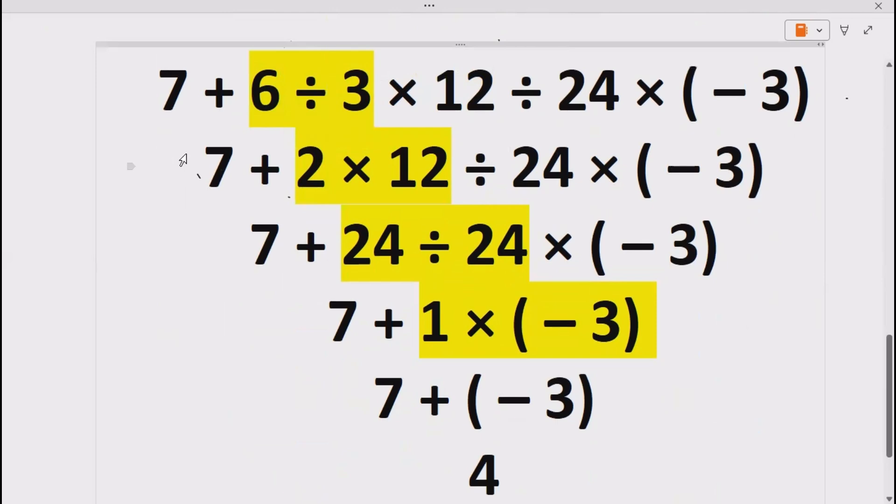Now again going from left to right, we have to do this multiplication. 2 times 12 gives us 24, and then we have to do this division. Now 24 divided by 24 gives us 1, and here we have to do now multiplication.